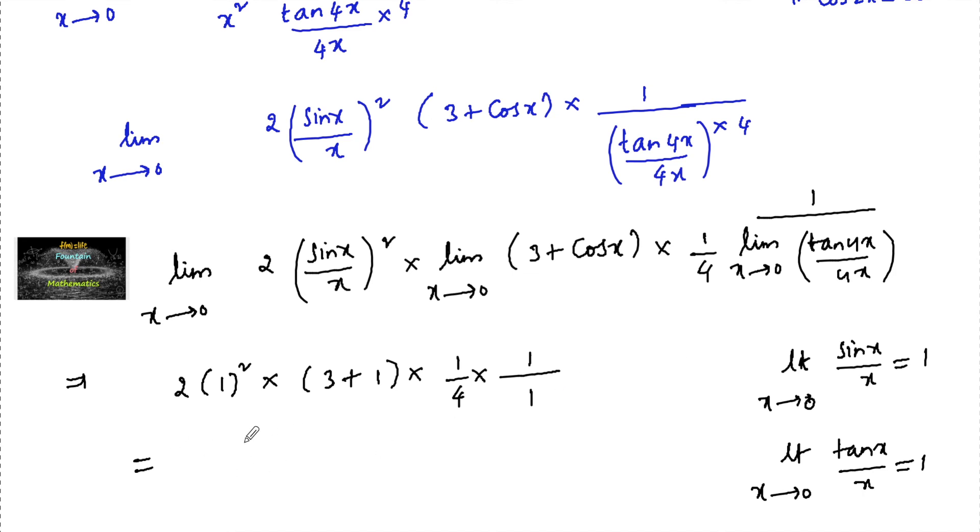So this is 2 into 4 into 1 upon 4 into 1, which is equal to 2. So we can give the answer as 2.